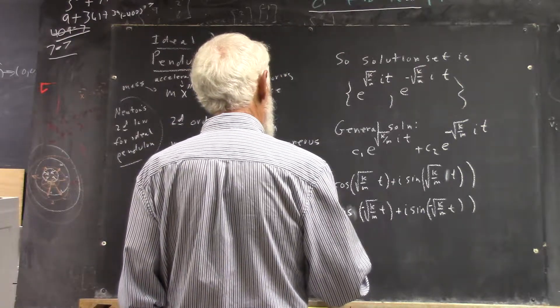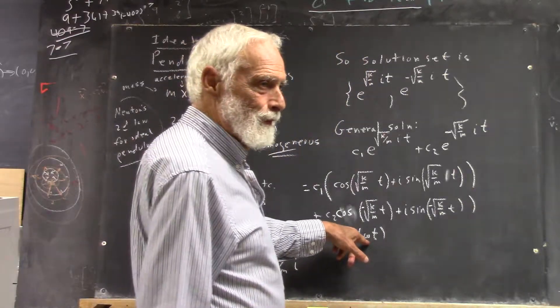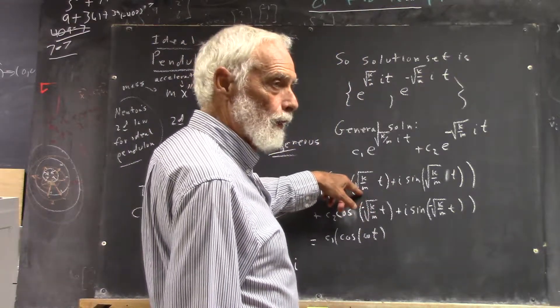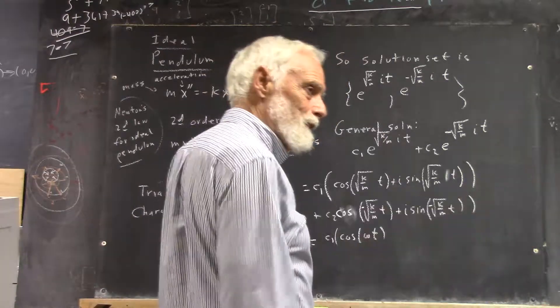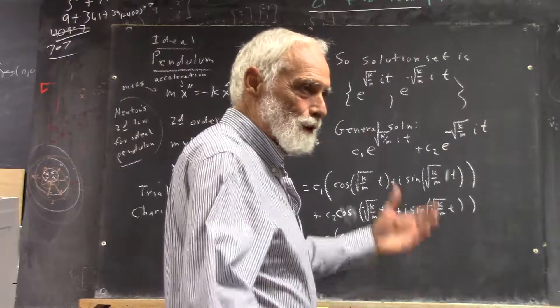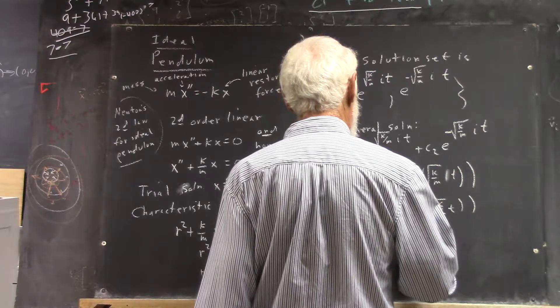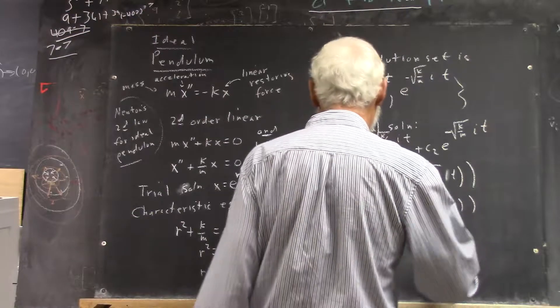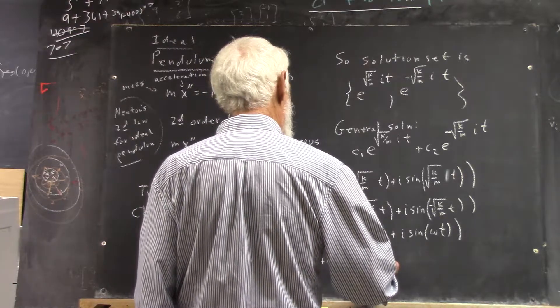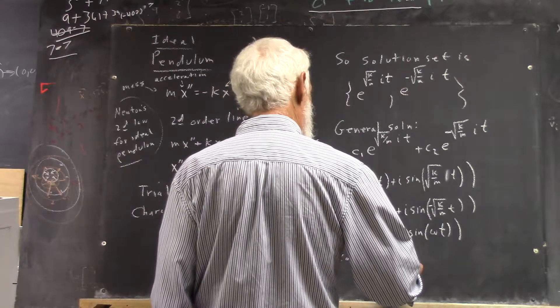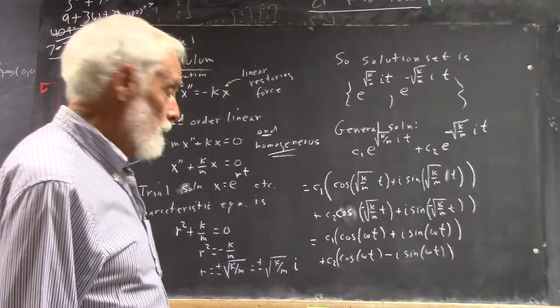So the cosine of negative square root of k over m t is just the cosine of the square root of k over m t. The sine of negative square root of k over m t is the negative of the sine. So this equals C1 times the cosine of omega t, and where does that omega come from? That's what I'm going to call square root of k over m because I'm tired of writing all that. Also because that's what everybody calls it. And it's identified with angular velocity. Something you'll learn to love in dynamics. And you'll learn to love it at some point.